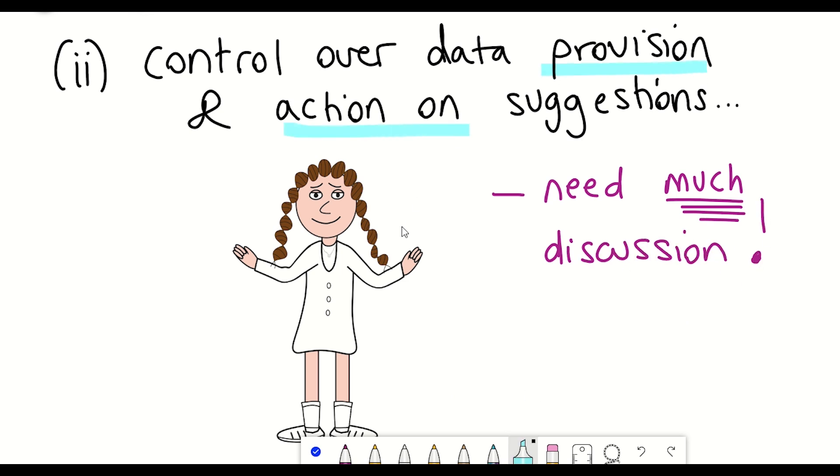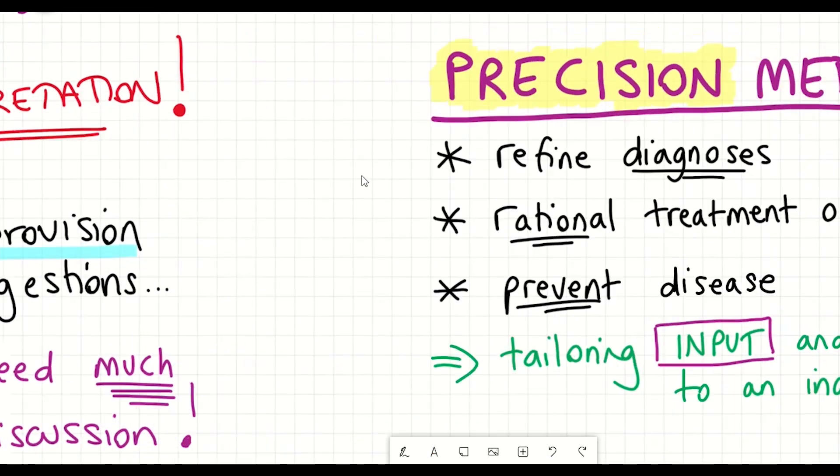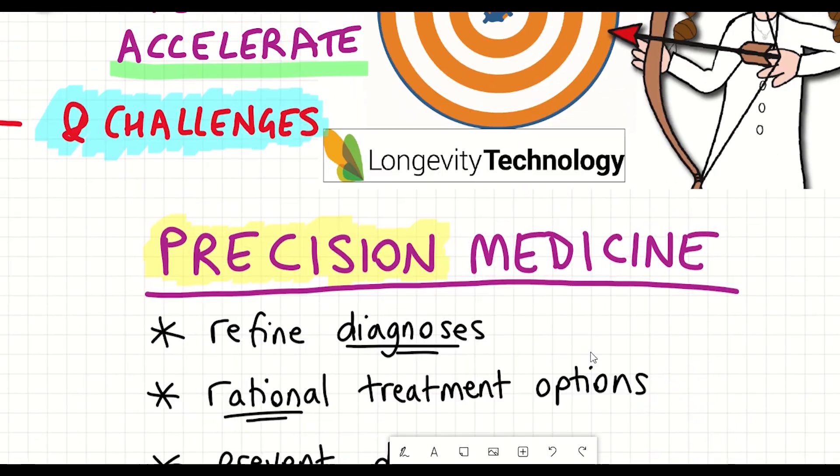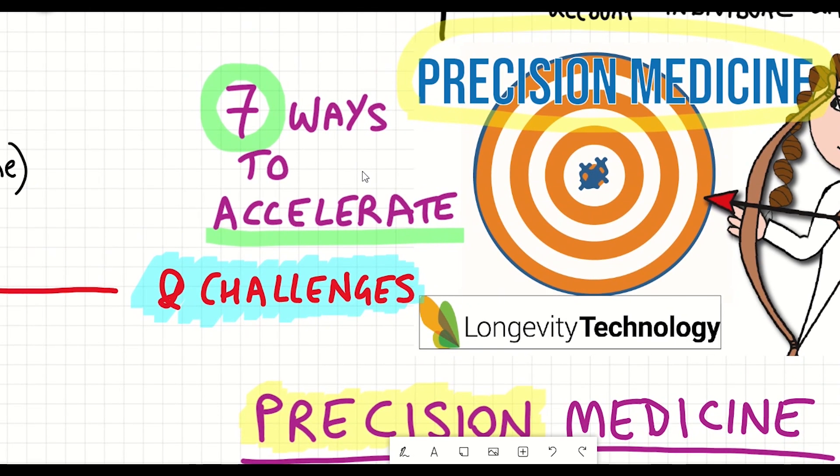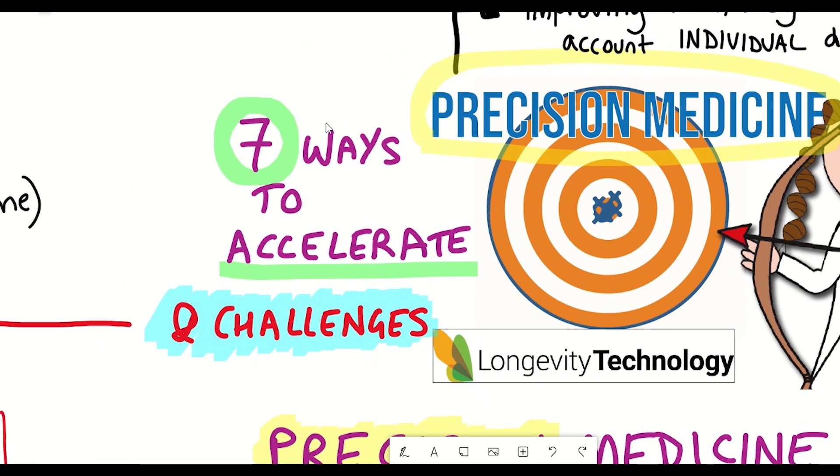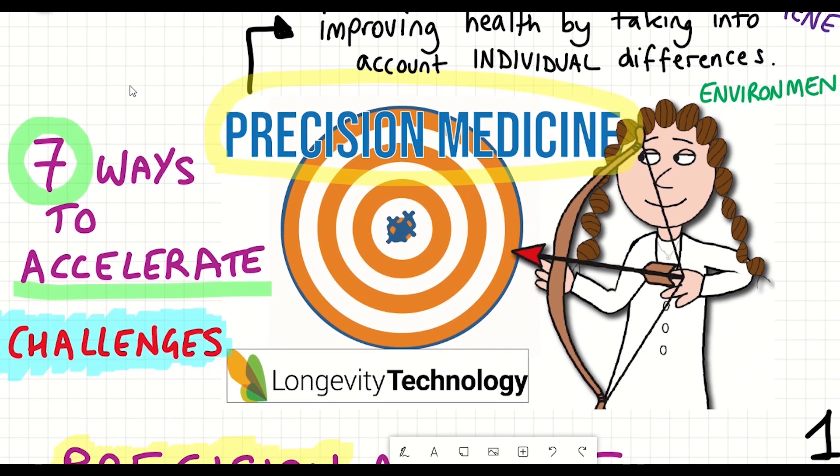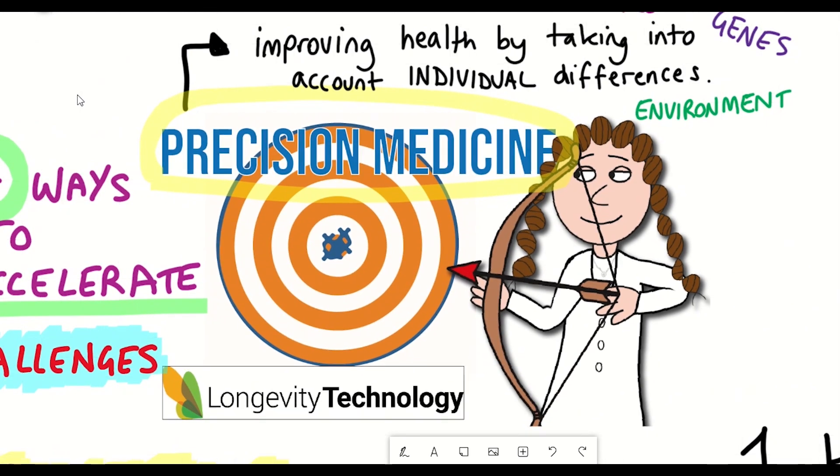So all in all, there is much promise for precision medicine, with real-time, accurate, predictive, valuable guidance to promote healthspan for each individual. However, as we've discussed, there are also many challenges to achieving precision medicine by 2030.